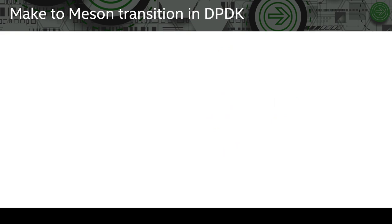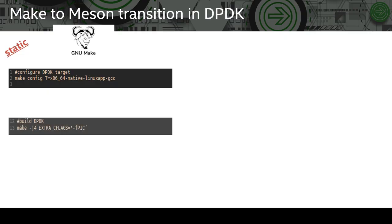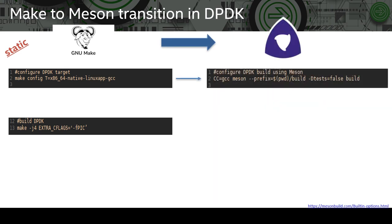Now let's make a side-by-side comparison of the build commands for Make and Meson which we use in our Travis scripts. Let's take the case of static builds. First we do make configure specifying the target type and then we build DPDK using Make. In case of Meson, we do the configuration similarly but it's not required to specify the target since Meson will auto-detect it for us. So in this case you just have to specify a build directory, which is 'build' in this case.